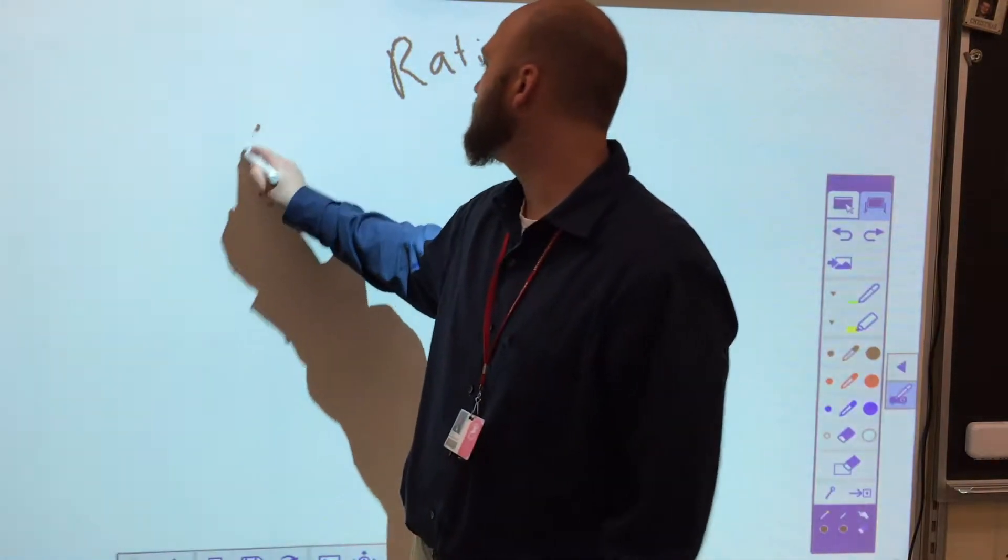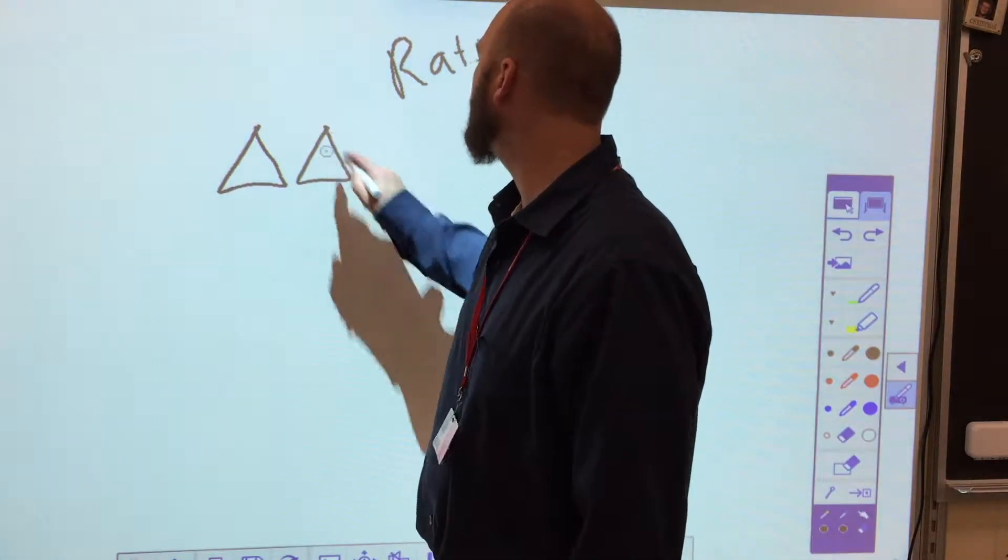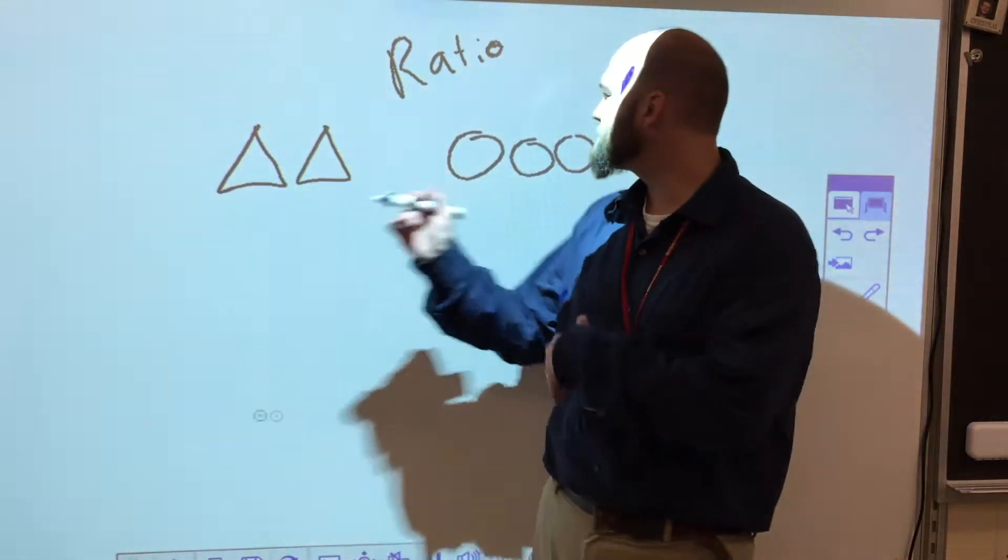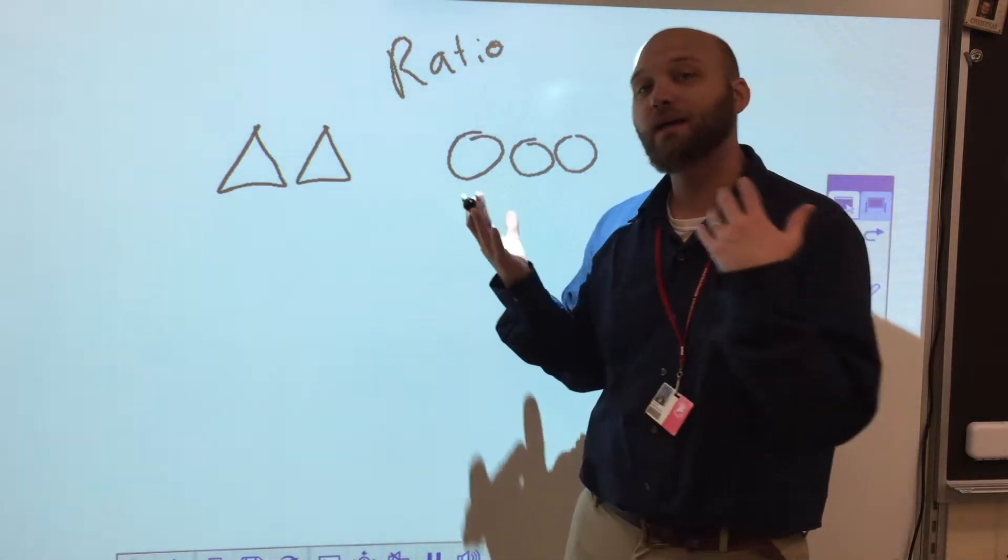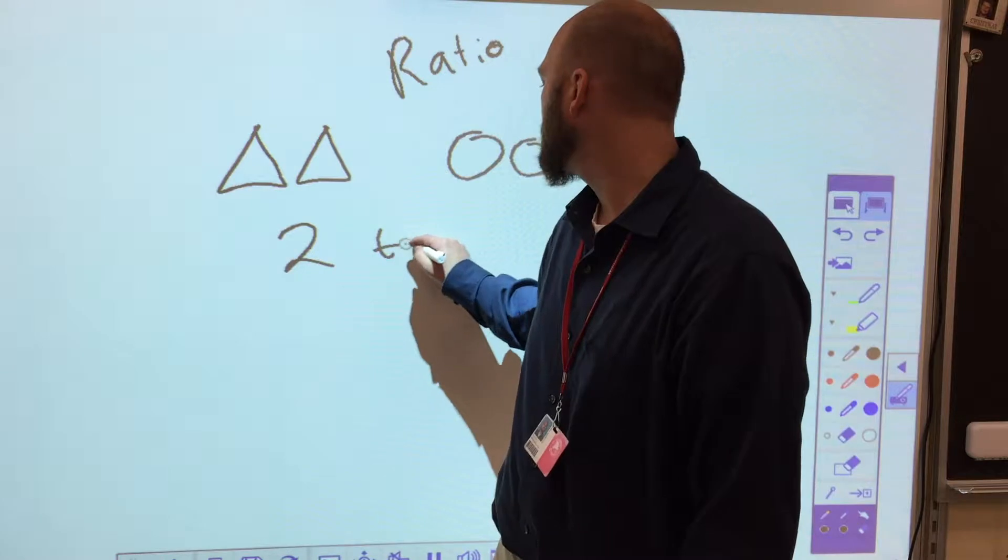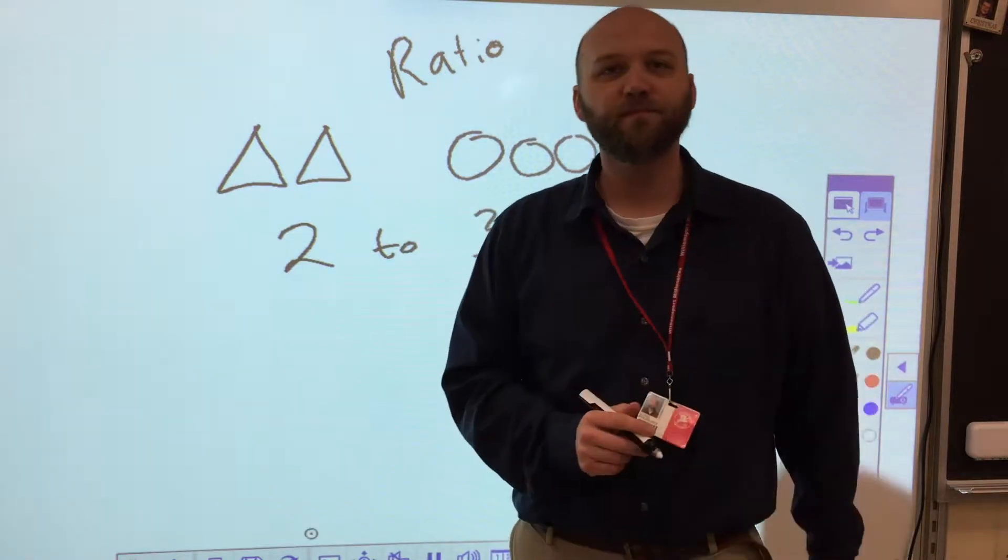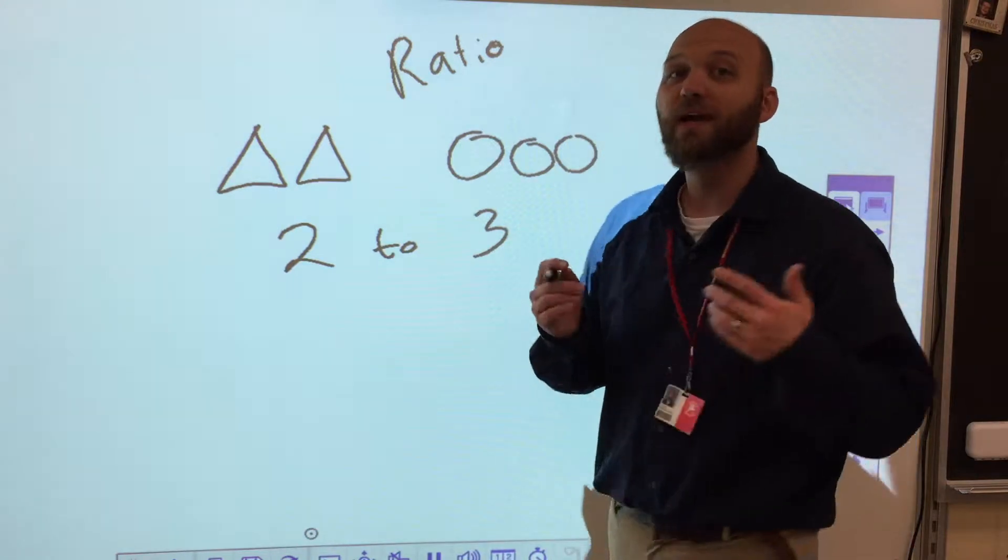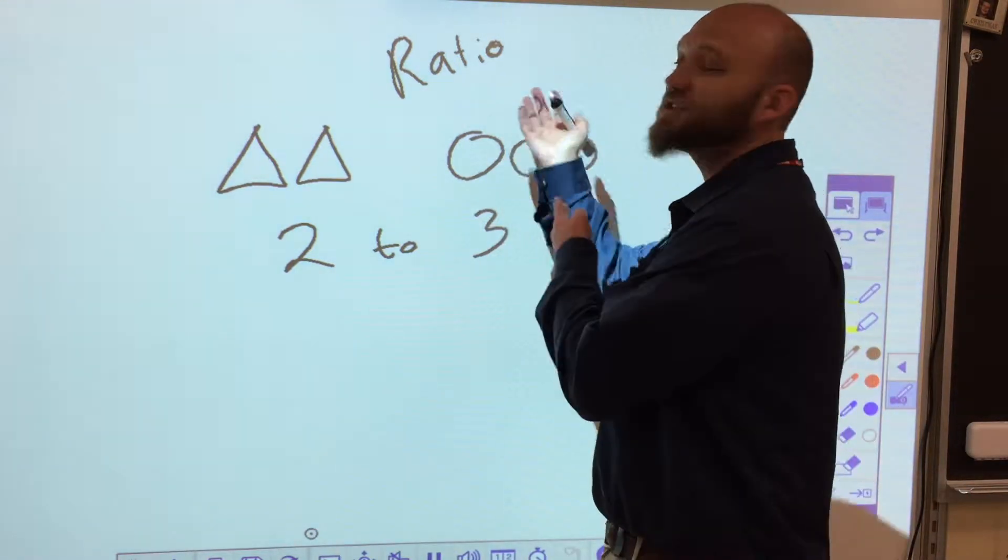So the first thing I want to do is just start with a basic concept. If I'm looking at two triangles and three circles, my ratio is two to three. You might say, well, that's pretty obvious, Mr. W. I can count two and I can count three. That's it, guys. That's our ratio.